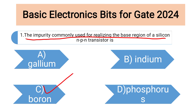Both gallium and indium are also trivalent impurities, but for creating P-type semiconductors we mostly use boron. So the answer is option C, boron.